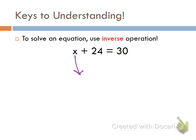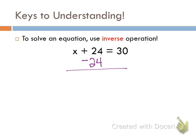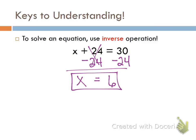To cancel positive 24, I do the inverse operation and subtract 24. Since 24 minus 24 equals 0, I mark a big X through it. I want to see this written on your paper with an equal bar. I've canceled everything on that side, so x is now by itself. But here's my rule: whatever I do to one side of the equation, I do the exact same thing to the other side. That gives us x equals 6.